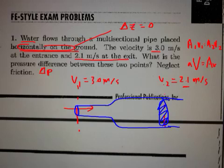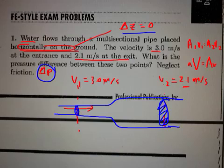So we know the pipe looks something like this — I'm exaggerating it as well. We know delta Z is zero, we're looking for the pressure difference, and we can neglect friction.